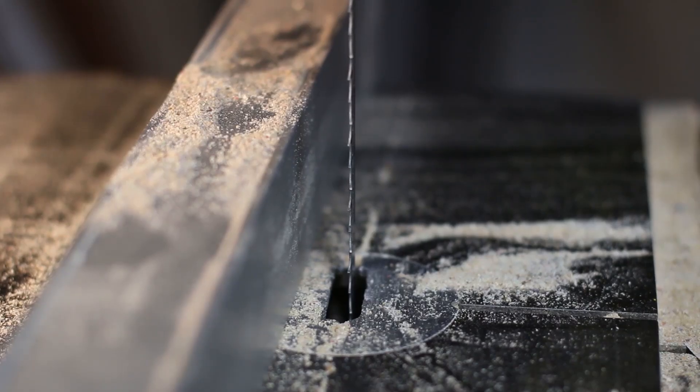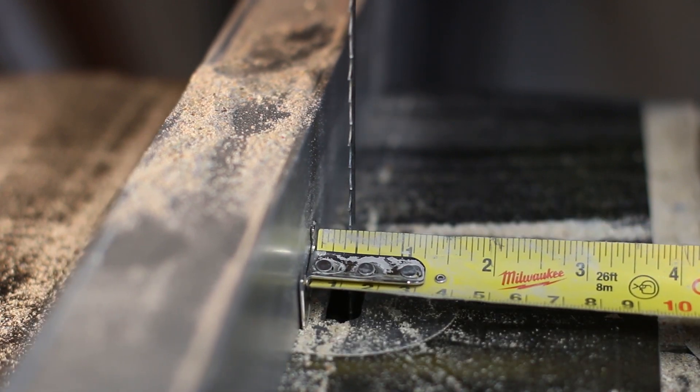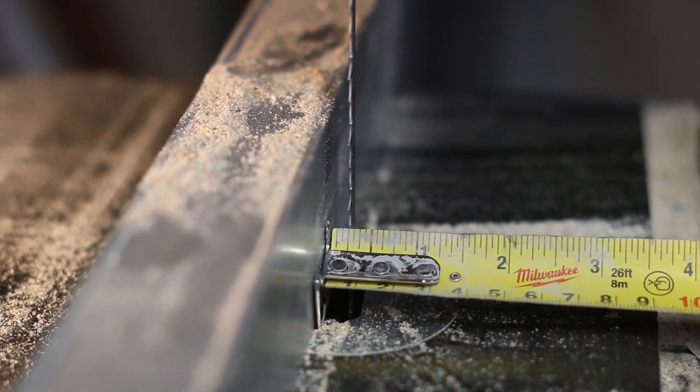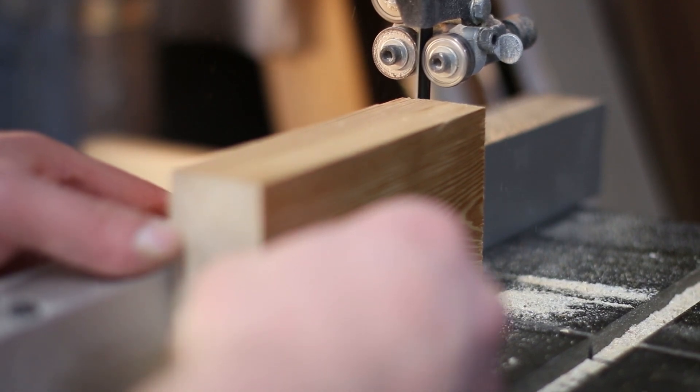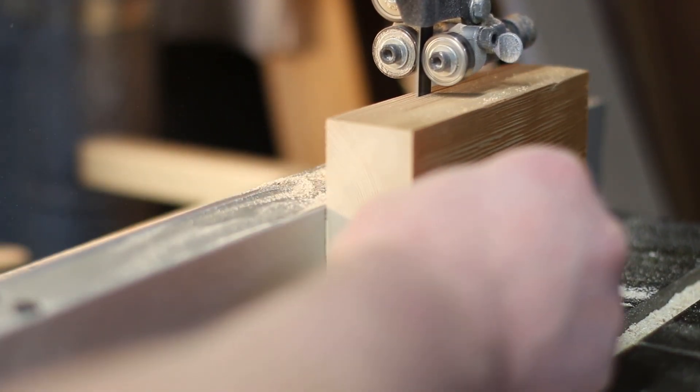After the 2x4 was cut to length, I used the bandsaw to cut off what will be the front and back panels of the lock. I chose to make these a quarter inch thick and use the fence for a nice straight cut.